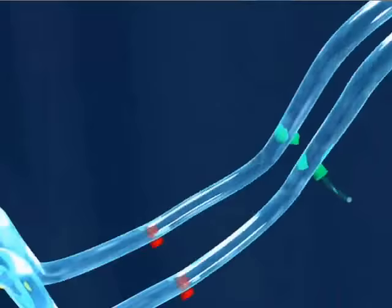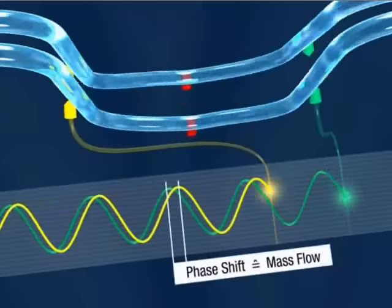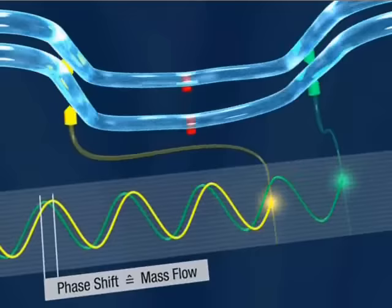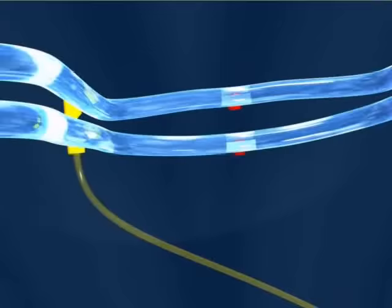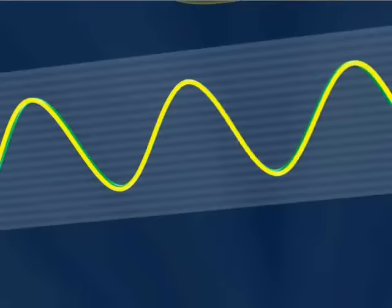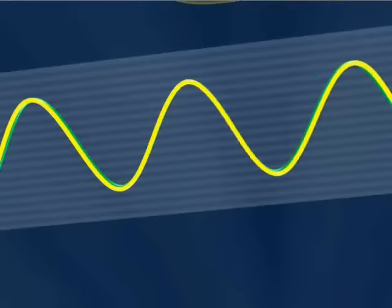A phase shift occurs between the first and the second sensor. The mass flow rate is derived from this phase difference. Should the density of the media need to be determined, it is simply computed by evaluation of the oscillation frequency of the measuring tubes.